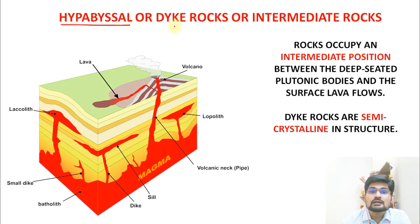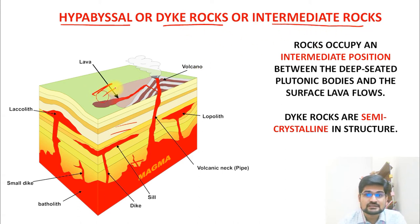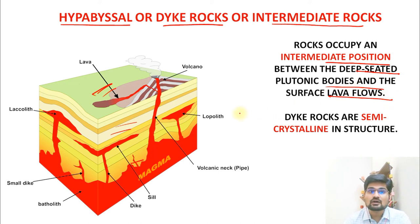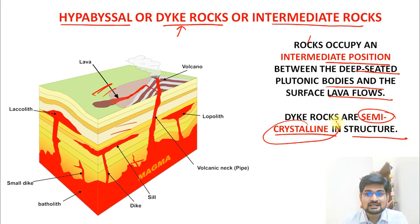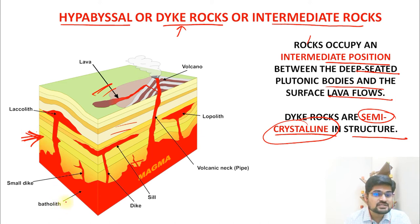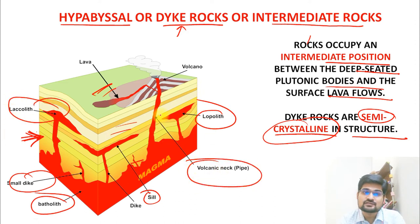Hypabyssal or dike rocks are intrusive formations trapped inside — intermediate rocks that are not available on the surface. They occupy an intermediate position between the deep-seated plutonic bodies and surface lava flows. These dike rocks are semi-crystalline in structure. Related features covered in previous lectures on volcanoes include batholith, dikes, sills, lopolith, volcanic neck, laccolith, and phacolith.